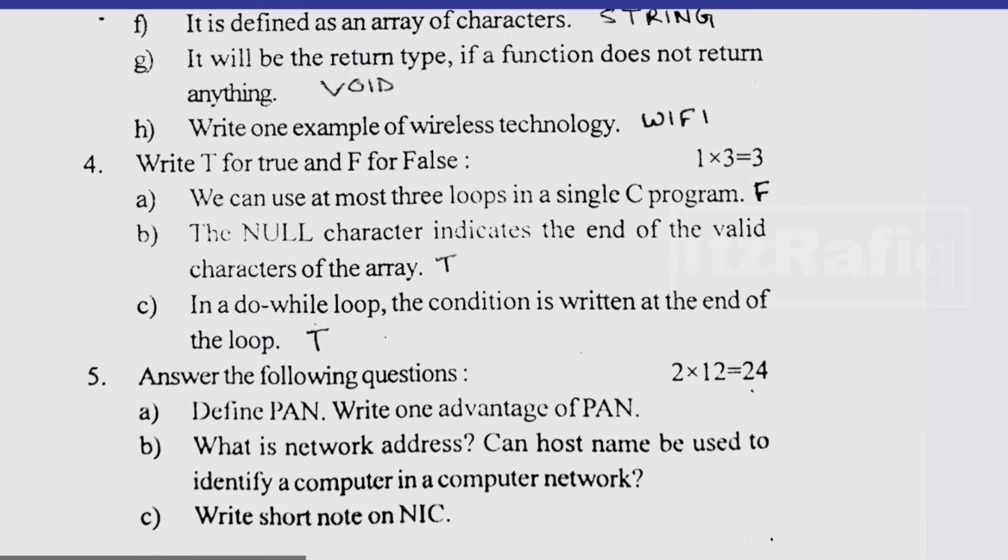Number b, null character indicates the end of the valid characters in an array, it is true. Number c, in do-while loop the condition is written at the end of the loop, it is true.